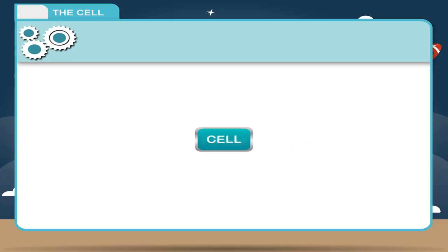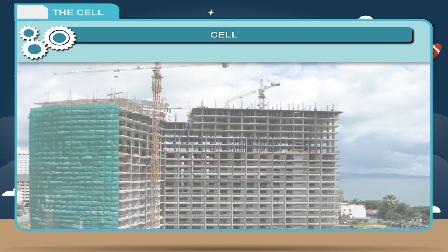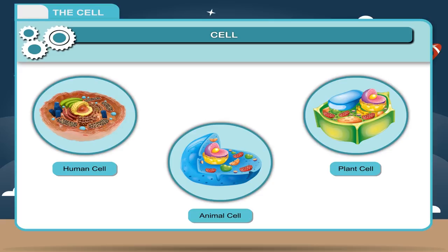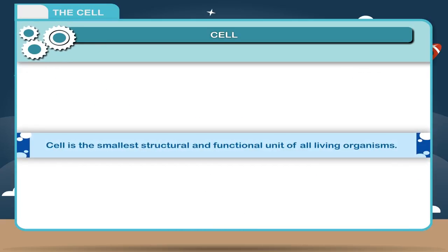The cell. You might have seen the construction of a building. Each building is made up of many bricks, and each brick represents the unit of a house. In the same way, living things are made up of numerous biological units. Each unit is called the cell. Cell is the smallest structural and functional unit of all living organisms.